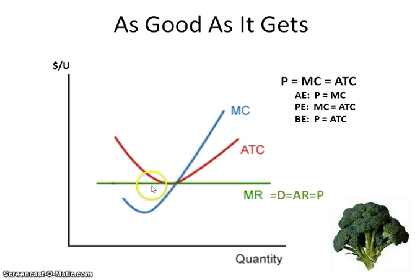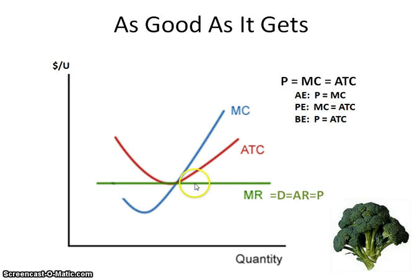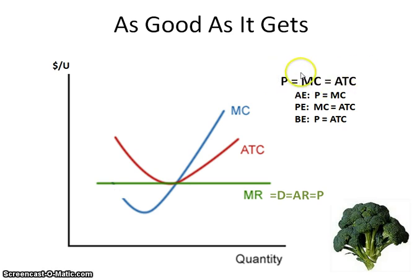What you can see here by the graph when you're looking at long run equilibrium is that everything is intersecting all at this one point. You have the ATC curve, the marginal cost curve, and Mr. Darp all intersecting at the same place. When we're looking at this trifecta, the formula that we use is: price equals marginal cost equals average total cost.